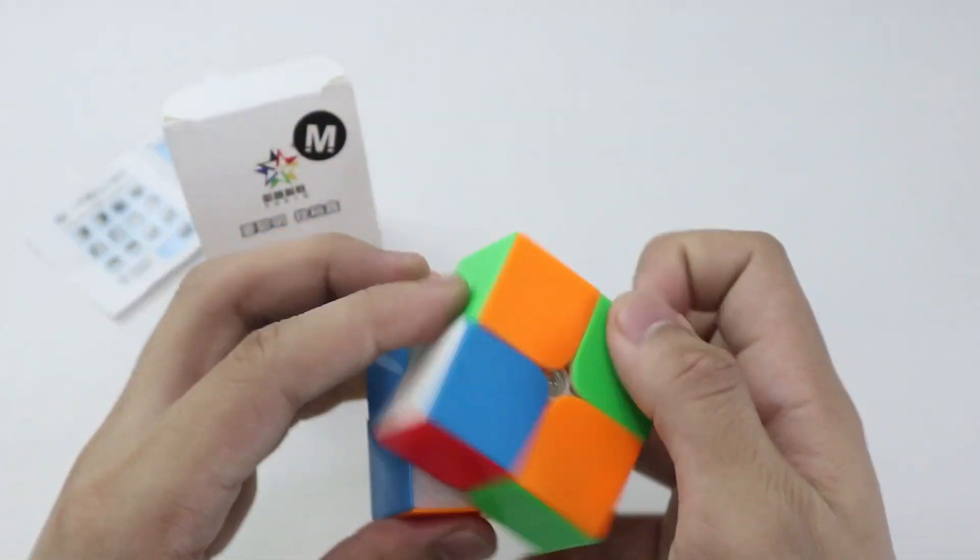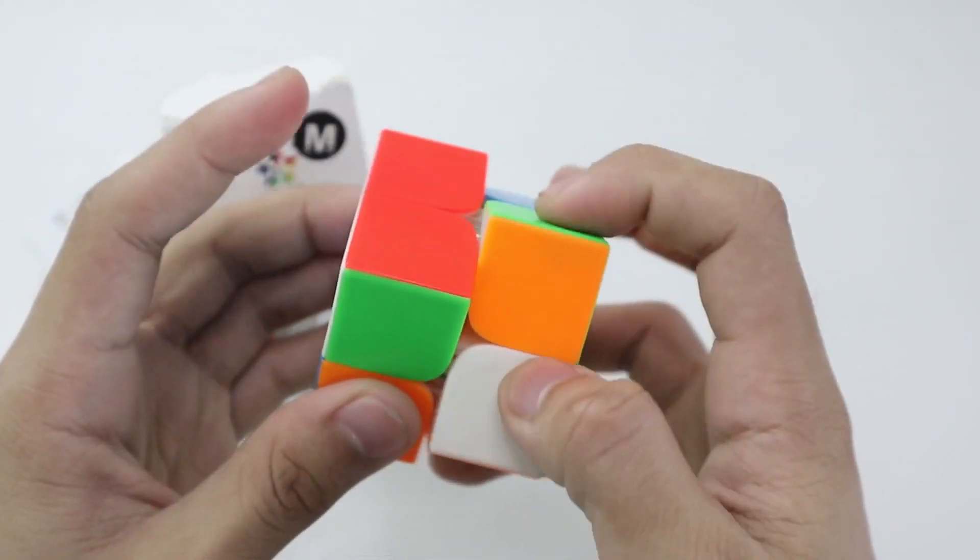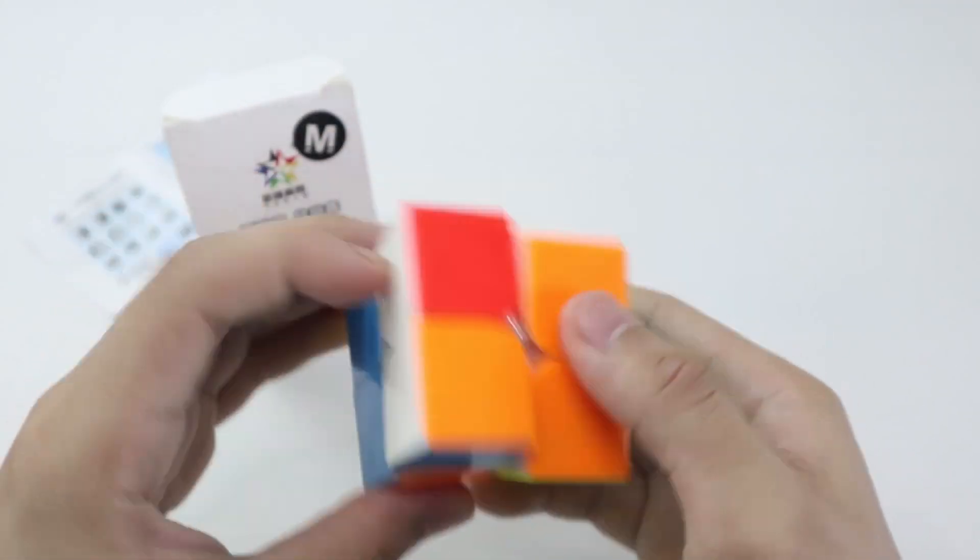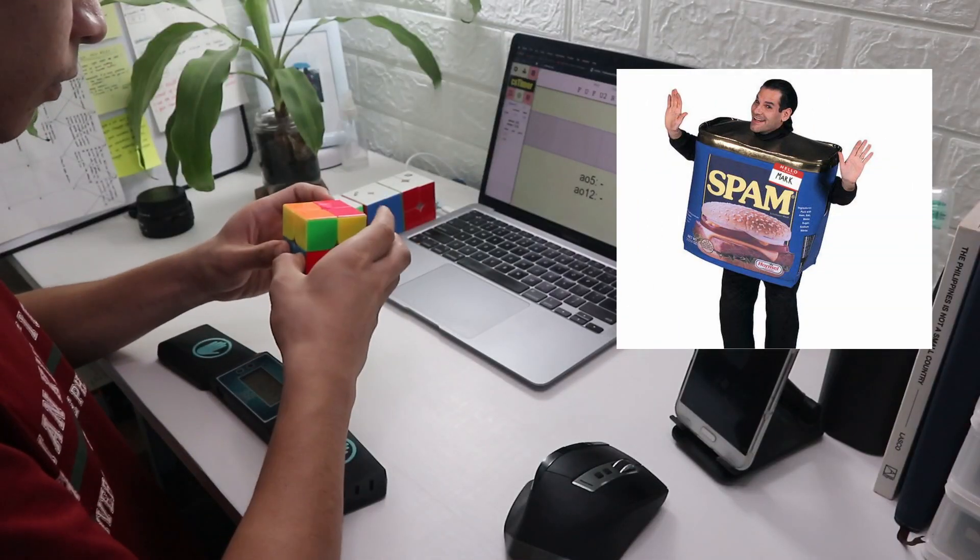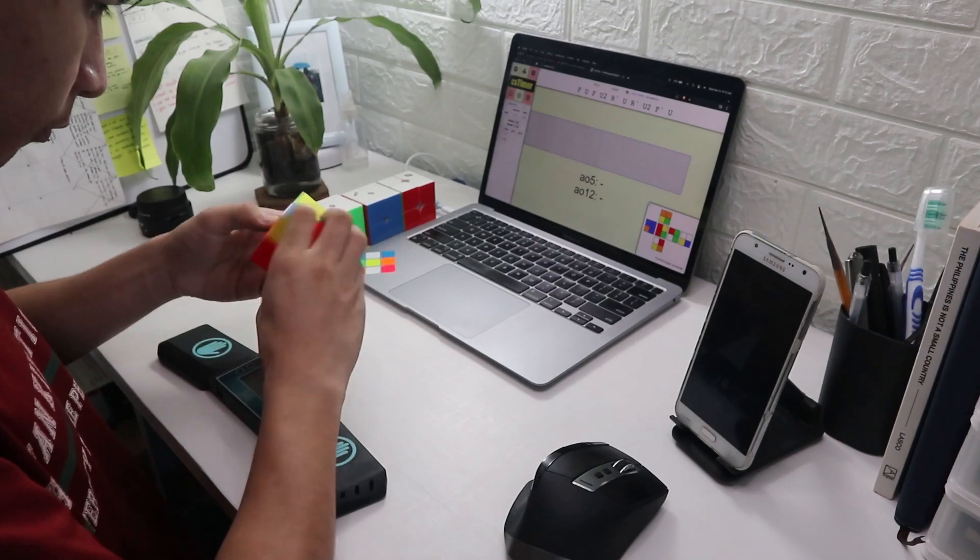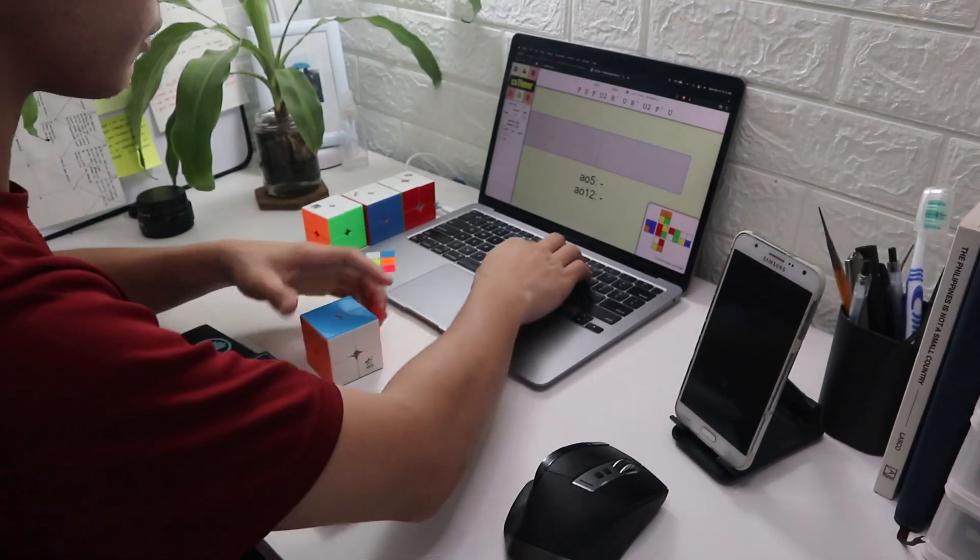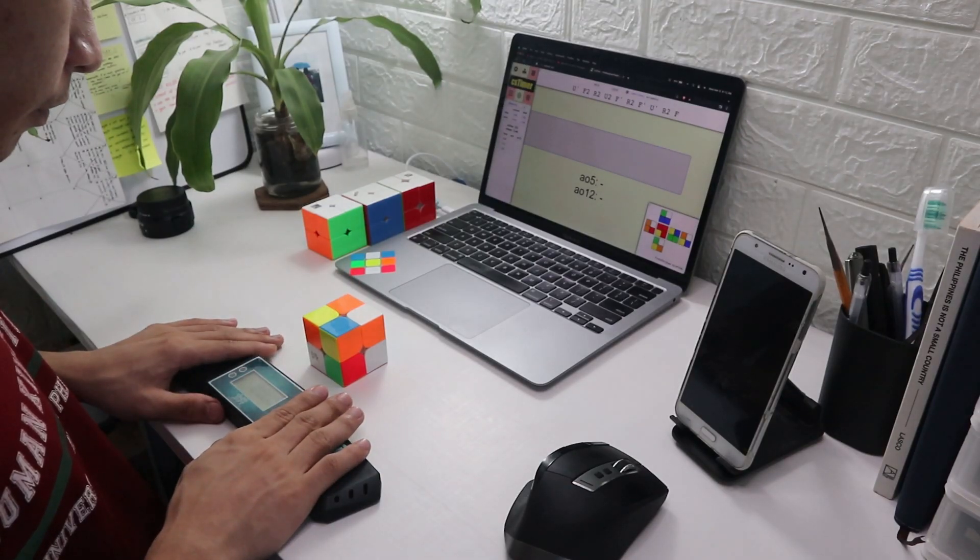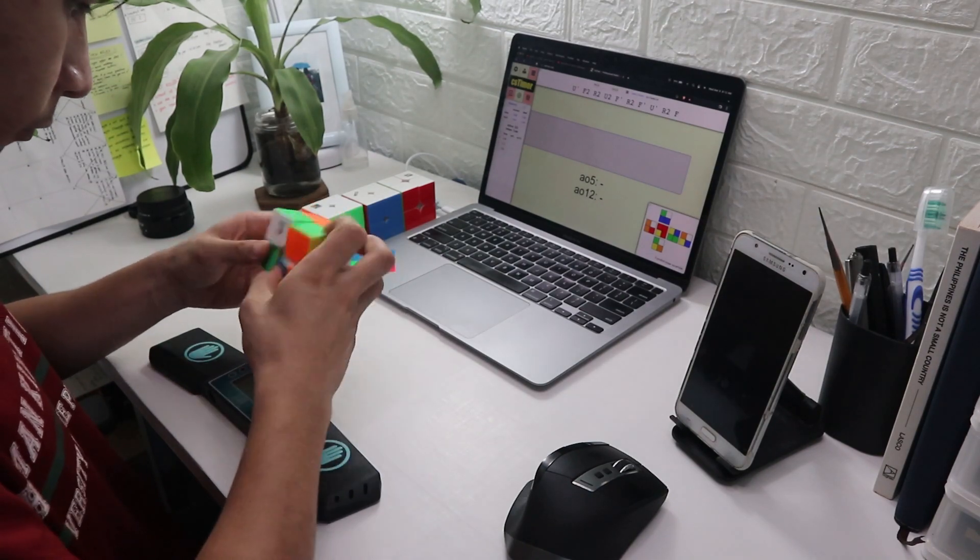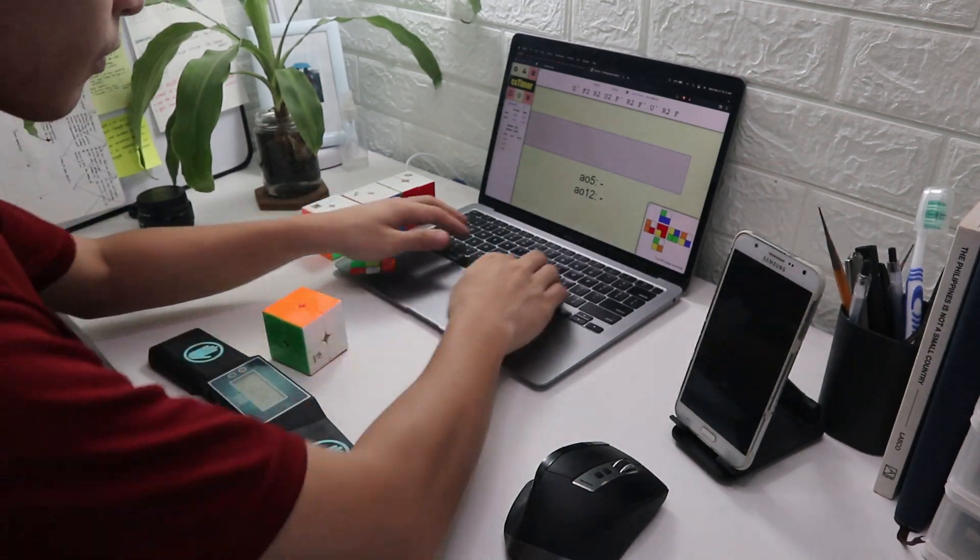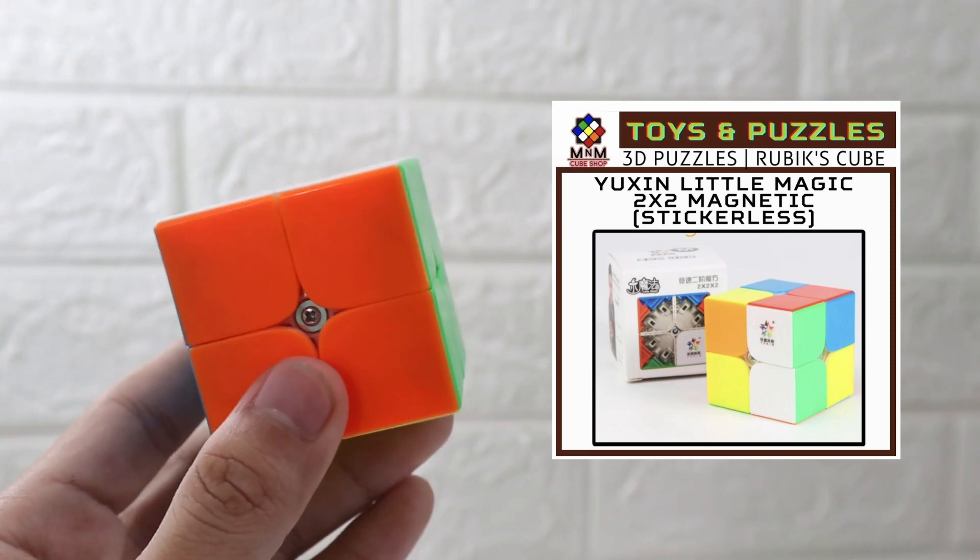However, one thing that I don't like about this cube is its out of the box feeling. Because it has these weird catches when you're spamming TPS so you need to loosen it a bit. But YuXin didn't include some screwdrivers. Not just kidding YuXin, don't do it please. Hashtag save environment. Overall, I think this is a good entry level 2x2 puzzle from YuXin. This is relatively cheap but competitive. Again, you can buy this in M&M Cube shop for about less than $7.